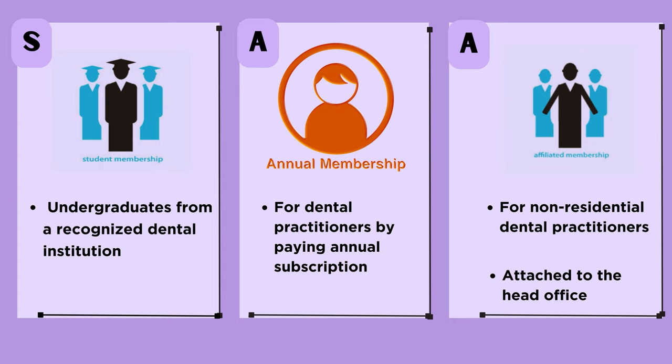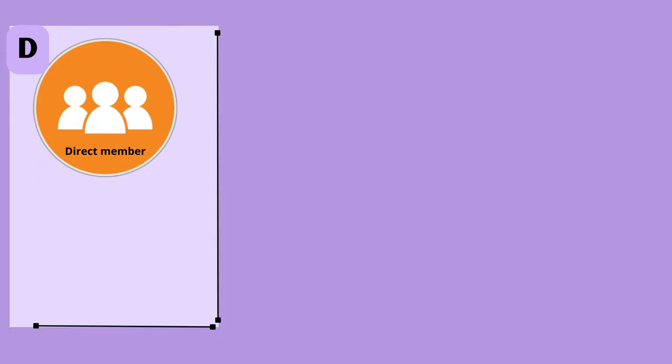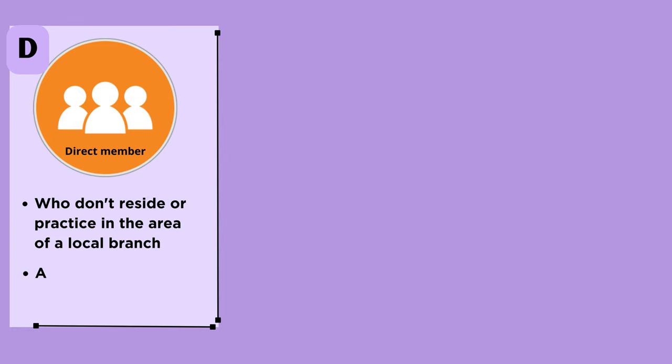The D here stands for direct members. There may be people who are eligible for membership but do not reside or practice in the area of a local branch. For such people, there is an option of becoming direct members, who shall be attached to a state branch or to the central headquarters.